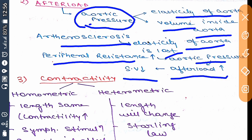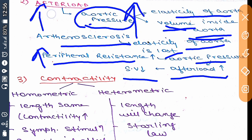If peripheral resistance increases, more blood accumulates in the aorta. If volume inside the aorta increases, aortic pressure increases, afterload increases, and afterload decreases your stroke volume.